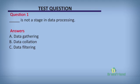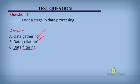Let's take some questions. Question 1: which of the following is NOT a stage in data processing? A. Data gathering. B. Data collation. C. Data filtering. The answer is C — data filtering is not a stage in data processing. Data gathering, data collation, and the input stage are all valid stages.